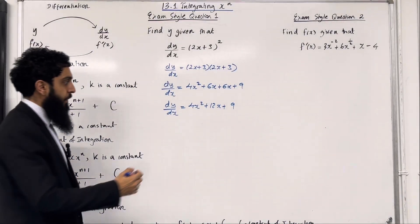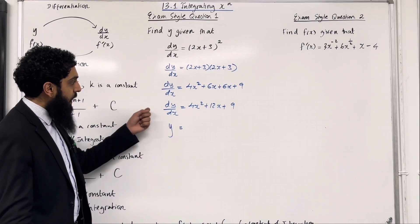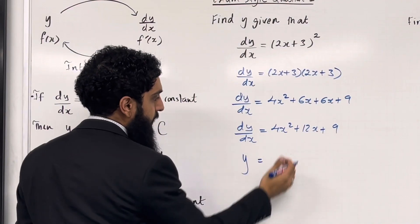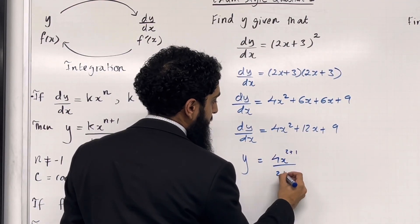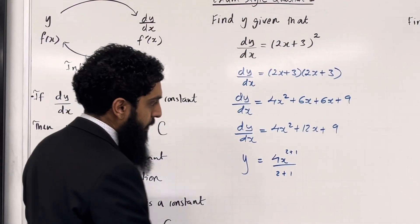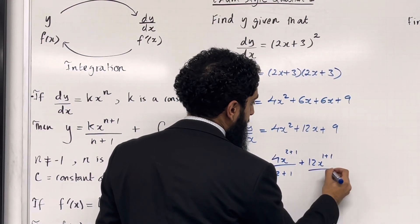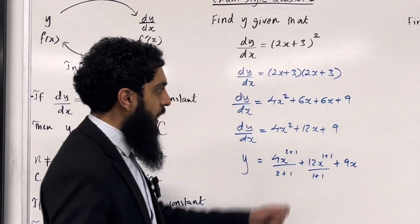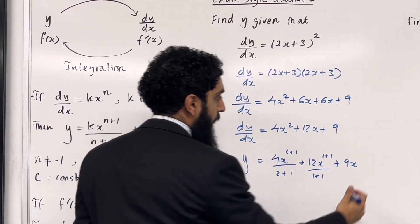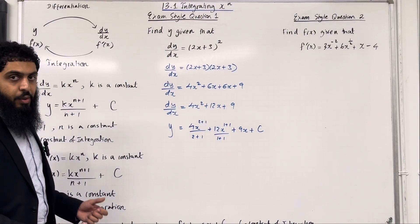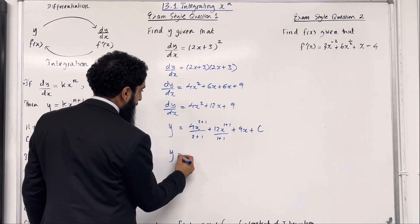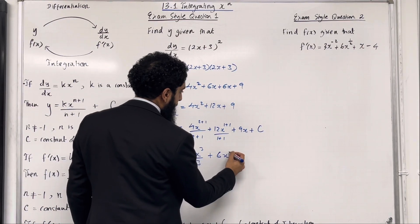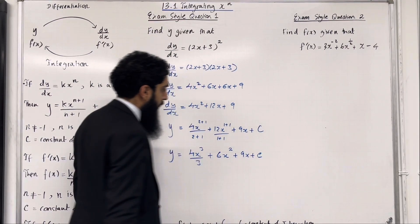Now I'm going to work out y. y is obtained by integrating dy/dx with respect to x. We do term-by-term integration. Starting with 4x²: we get 4x^(2+1) divided by (2+1). For the second term: plus 12x^(1+1) divided by (1+1). For the third term: integrating 9 with respect to x gives 9x. Plus c, the constant of integration. Simplifying: y = 4x³/3 + 6x² + 9x + c.